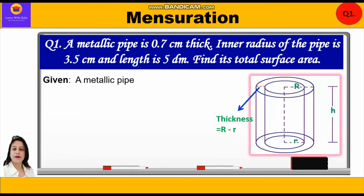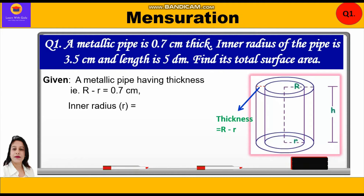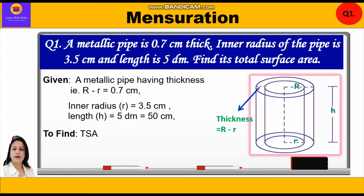Given in this question: a metallic pipe having thickness, that is R minus r, equal to 0.7 cm. Inner radius, small r, is equal to 3.5 cm. Length h is equal to 5 decimetres, which equals 5 × 10 = 50 cm. We need to find the total surface area of the metallic pipe.